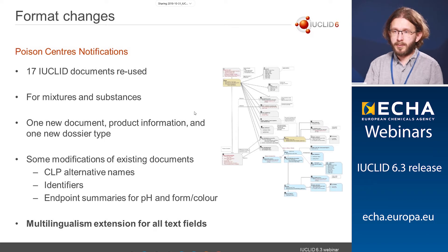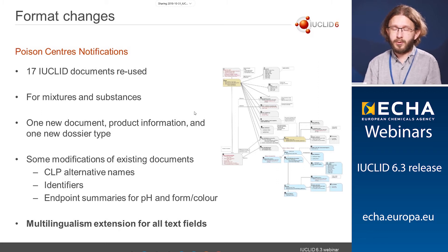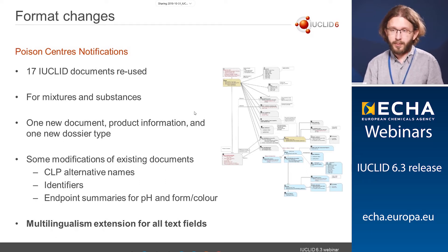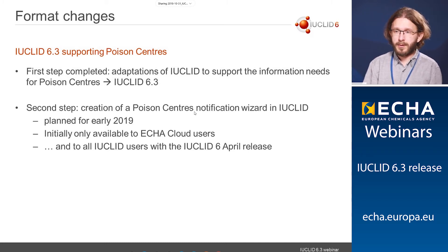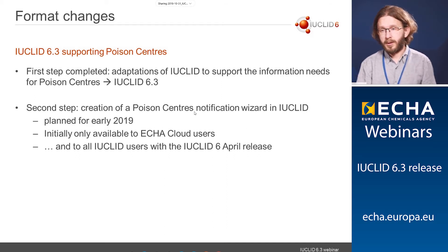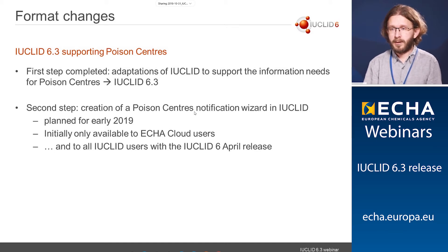The information requirements for poison center notifications include details about the submitter, mixture information, pH, mixture composition, a unique formula identifier, and information about packaging and product category. The new harmonized format chosen for submission of this information is Euclid. Out of more than 300 existing Euclid documents, 17 have been selected for reuse in PCN notifications — less complex than REACH registration dossiers, but covering the relevant parts to fulfill obligations under the poison centers update of the CLP regulation. The release plan: after the Euclid format update, a poison centers notification wizard is planned for early 2019, initially for cloud users only, then for all Euclid users in the next planned release in April.